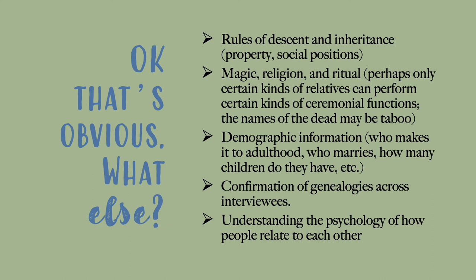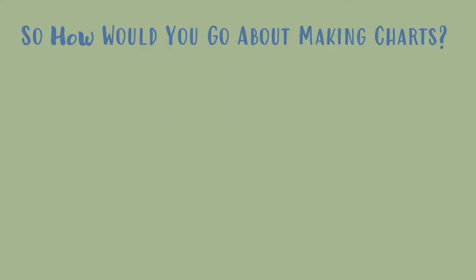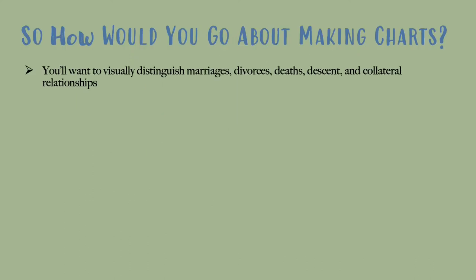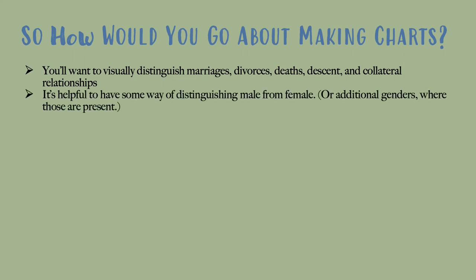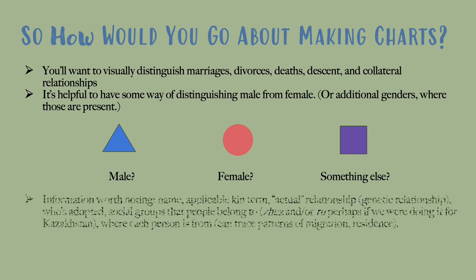Assuming I've convinced you that charts are useful, how would you go about making them? You'll want to distinguish marriages, divorces, deaths, descent, and collateral relationships. It is helpful to have some way of distinguishing male from female, and also a way of marking additional genders where those are present — if somebody is non-binary or two-spirit, you want to be able to represent that somehow. Typically we do this with shapes. You might also want to add additional information such as the person's name, the applicable kin term, and the actual relationship.